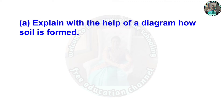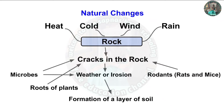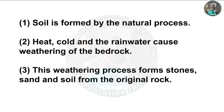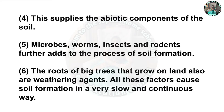Question 6(a): Explain with the help of a diagram how soil is formed. Here is the rock — because of heat, cold, wind and rain, the rock gets cracked. Microbes, roots of plants, and rodents also influence the cracks in the rock. Due to these cracks, weathering and erosion cause the formation of layers of soil. Heat, cold, and rainwater cause weathering of bedrock, forming stones, sand and soil. Microbes, worms, insects and rodents further add to soil formation. Roots of big trees are also weathering agents.